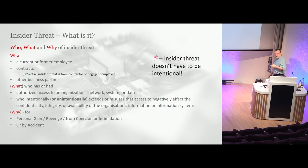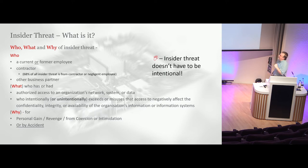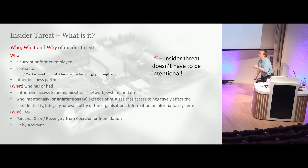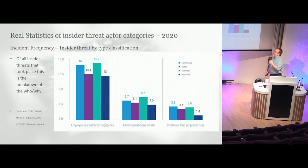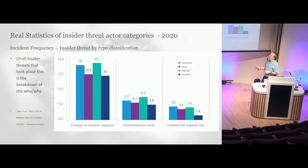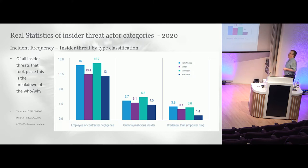So what is insider threat? It's a current or former employee or contractor — and it's interesting to note that 68% of all insider threat comes from contractor or negligent employee actions — or other business partner who has had authorized access to an organization's network, system, or data, who intentionally, and importantly unintentionally, exceeds or misuses that access to negatively affect the company. The vast majority of insider threat is actually done through process flaw or contractor or employee negligence. The people with nasty intent only form about a third of actual cases.